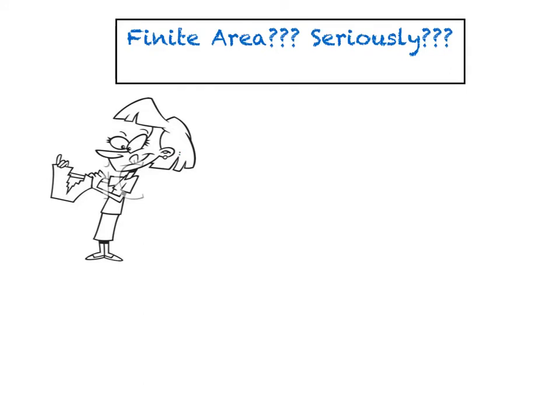My goal in the beginning of the lesson is to focus a lot on the theory of it, and then we'll gradually get into four examples. The question remains: how could you possibly have a finite amount of area if you are integrating all the way towards infinity?